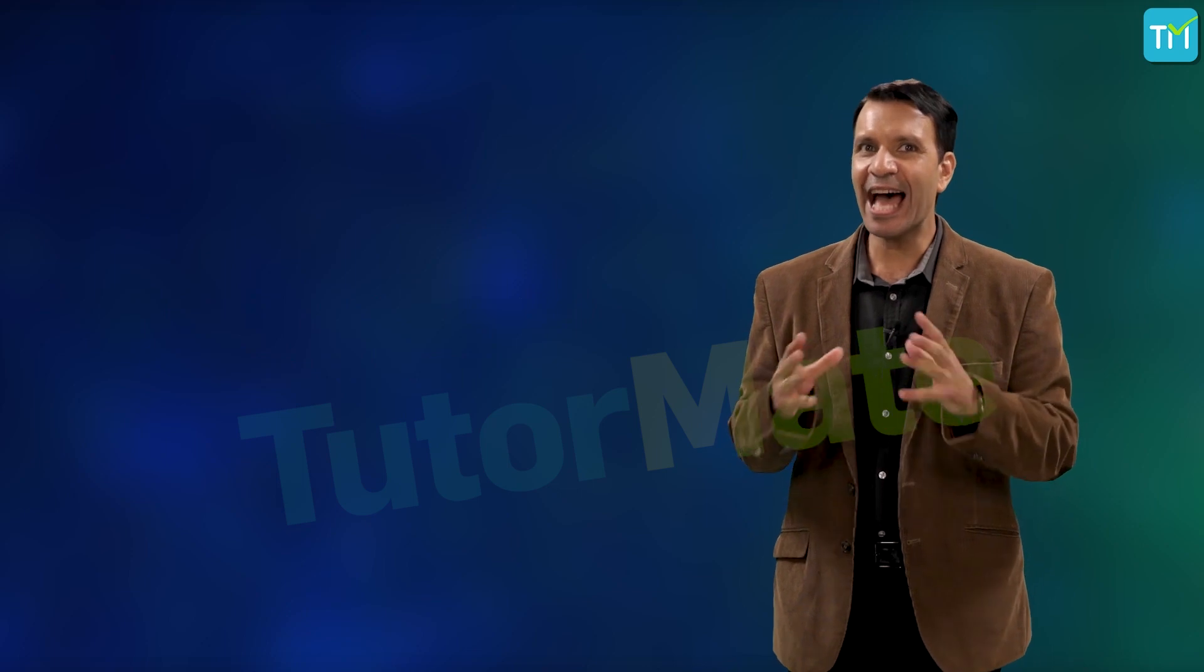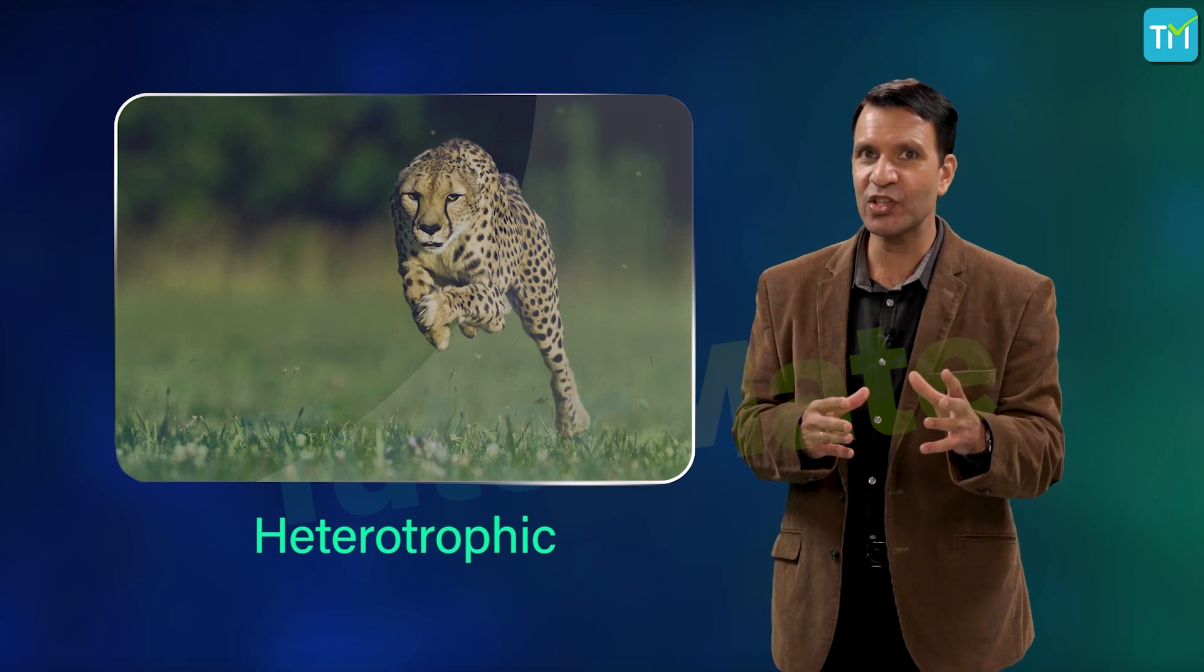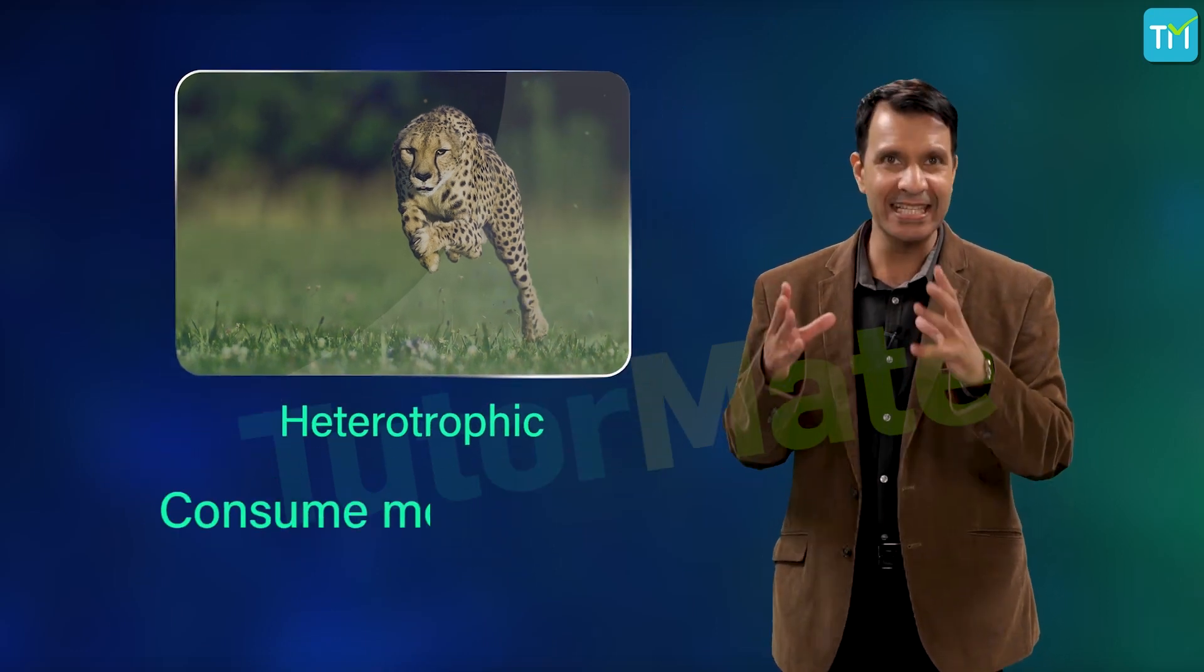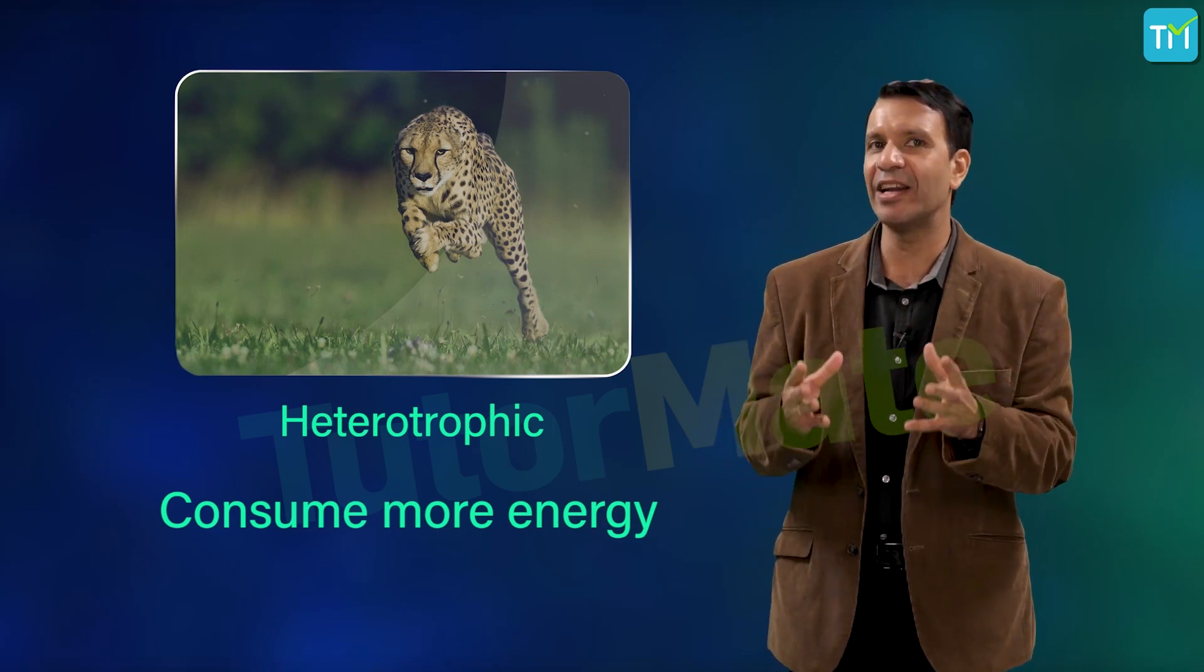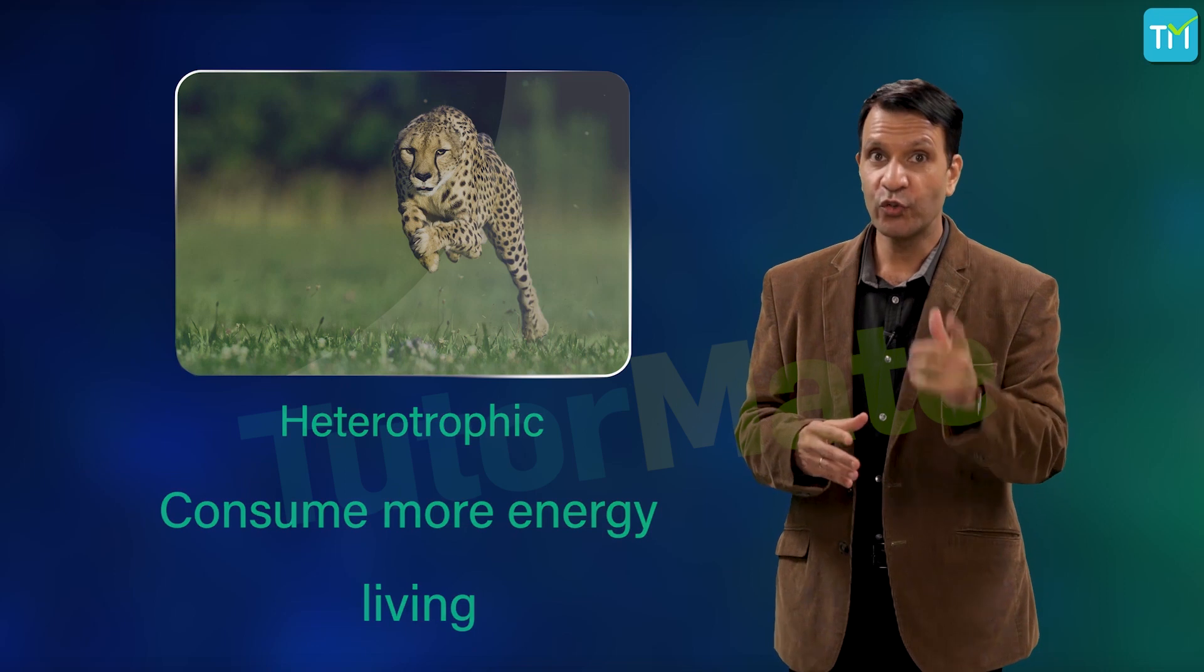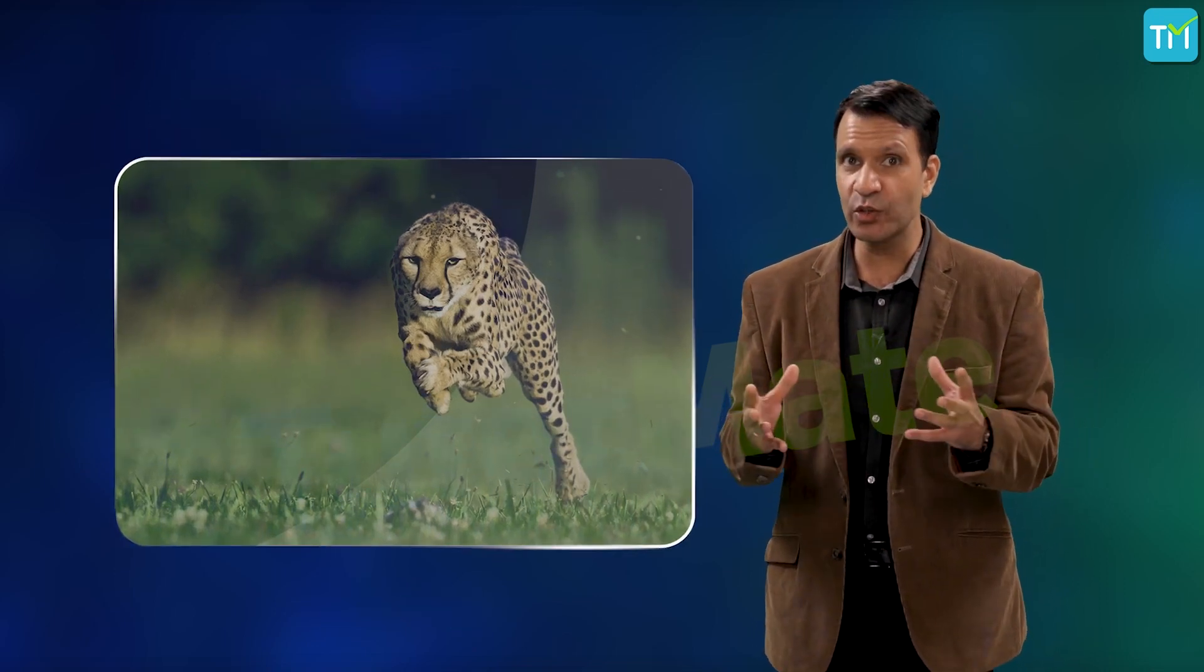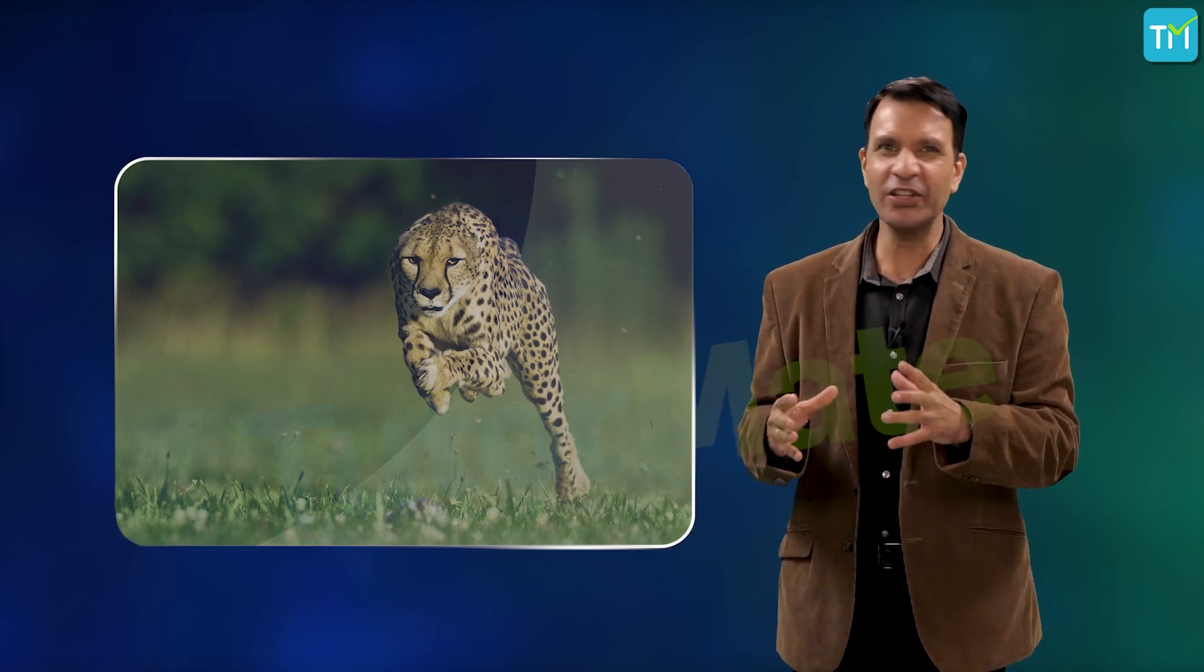Since animals are heterotrophic, they need to move around in search of food, mates, and shelter. So they consume more energy as compared to plants, and most of the tissues they contain are living. Also, the growth in animals is not limited to certain regions, and cell growth is more uniform.